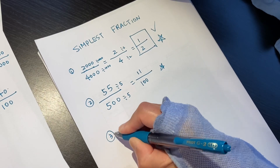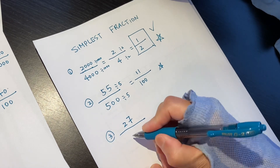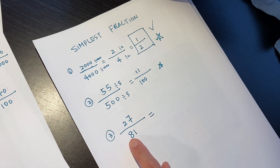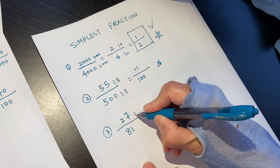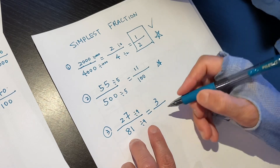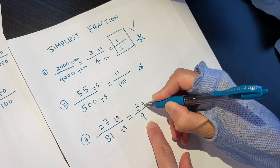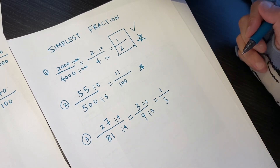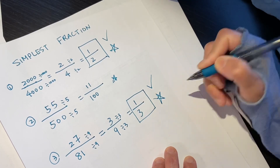The third one: 27 over 81. 2 plus 7 is 9, and 8 plus 1 is 9. So these two numbers can both be divided by 9. Let's divide by 9. 27 divided by 9 is 3. 81 divided by 9 is 9. So it's 3 over 9. I can still keep going — 3 can be divided by 3, and 9 can be divided by 3. It's 1 over 3. Can we keep dividing further? This is already 1. No way. This is the simplest fraction.